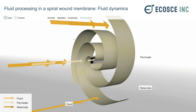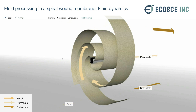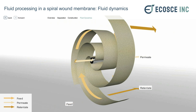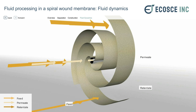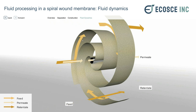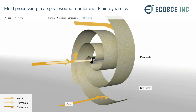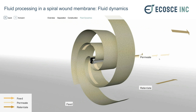The feed is actually going through along the edge, and then the permeate — what makes it through — flows directly through.